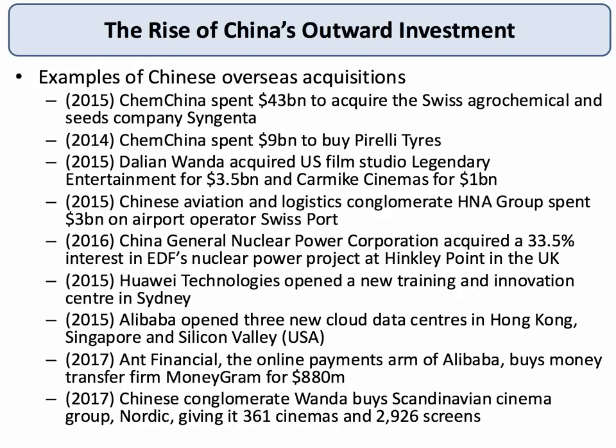One of the really key aspects to be aware of in terms of Chinese reform is the fact that Chinese businesses are being encouraged to go global. China is becoming less of a purely mercantilist exporter of goods and more of an exporter of capital. Here are some recent examples of Chinese overseas acquisitions: ChemChina spending $10 billion to buy the Italian Pirelli Tire business; Dalian Wanda buying Legend of Entertainment and Carmike Cinemas in the United States; Alibaba opening cloud data centers in Hong Kong and Silicon Valley; and Ant Financial — the online payments arm of Alibaba — buying MoneyGram, a big money transfer firm, for nearly a billion dollars.